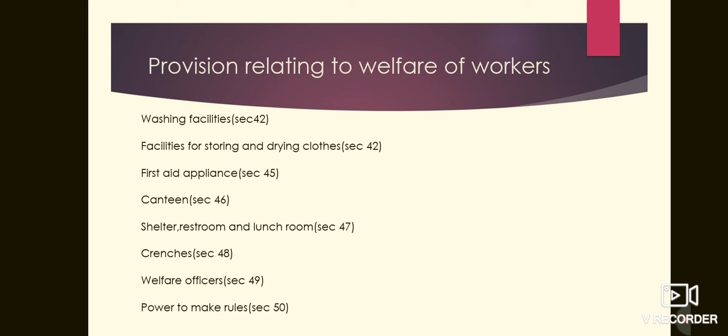Next is shelter, rest rooms and lunch rooms, mentioned in session 47. Every factory in which more than 150 workers are ordinarily employed shall provide adequate and suitable, clean, sufficiently lighted and ventilated rest and lunch rooms. Workers shall not be allowed to eat any food in the work room.